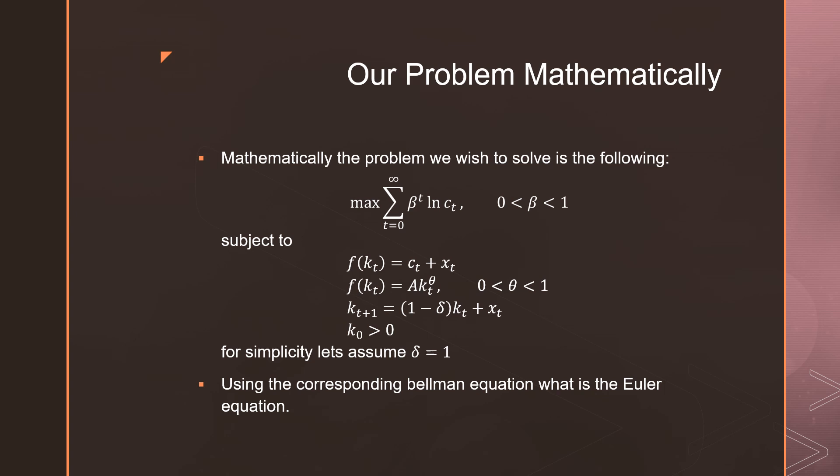So this is our problem mathematically. It's just the same sort of problem that we've been using in the previous couple videos where this is just a planner's problem and we have our law of motion. But for simplicity, we're going to assume that capital depreciation is equal to 1. What we want to do is using this corresponding Bellman for this sequential problem, we want to know what the Euler equation is.